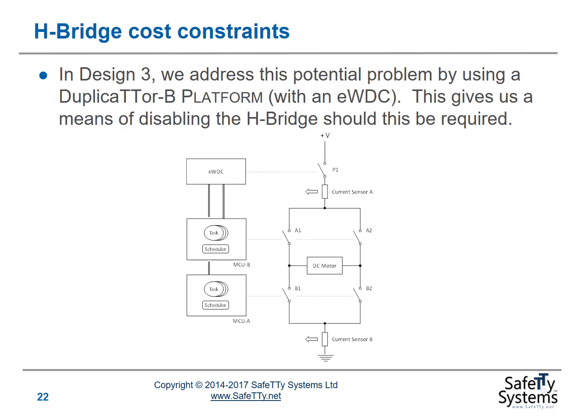In design 3, we assume an external watchdog controller (EWDC) that requires a dynamic signal from both MCU-A and MCU-B to remain operational. Without the dynamic signal from both microcontrollers, the EWDC won't function and the power switch will be opened, providing a means of disabling the H-bridge. Now we have three independent processing elements, and as long as one of these three elements is functional, we will be able to disable power from the system.